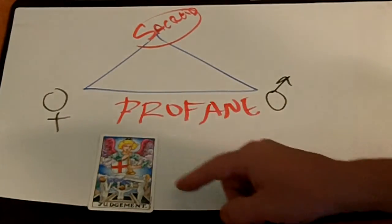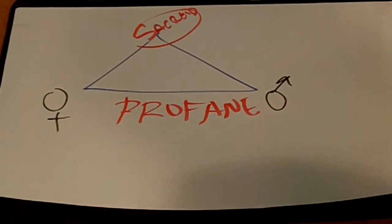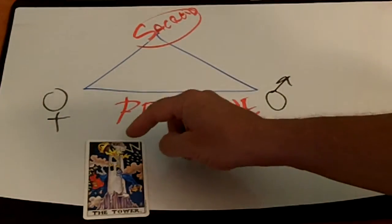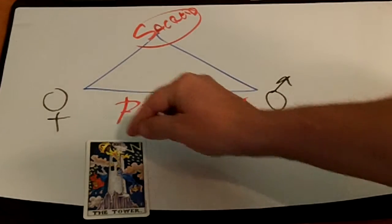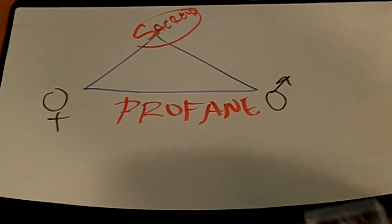Again, sacred, profane, male, female. Sacred, God, crown, look, lightning, and then for profane, again, polar opposites. This is just Waite was really predictable.